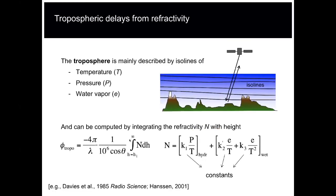If we want to know what the delay really is, we integrate the refractivity along the travel path to get the total delay. The refractivity index is integrated vertically with height. The one-over-cosine factor is the projection from the vertical zenith to the slant radar line of sight. You also have scaling coefficients, and the factor 4π/λ — which you may have seen before — relates to the conversion from displacement to phase. The minus one is just a sign convention.